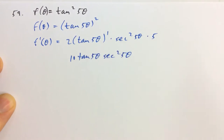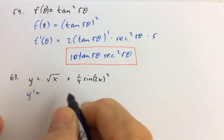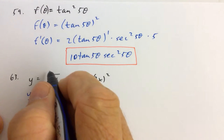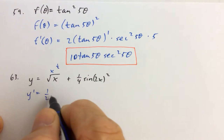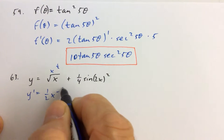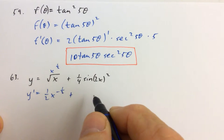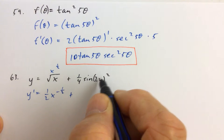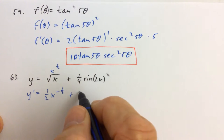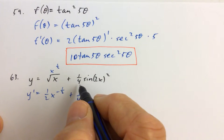So you have to use the chain rule twice on this one. For number 63, we have x to the 1/2 here, so the derivative of x to the 1/2 is 1/2 times x to the negative 1/2, plus. So we have the sine of 2x squared, so 1/4 is the constant — we'll leave that out there.